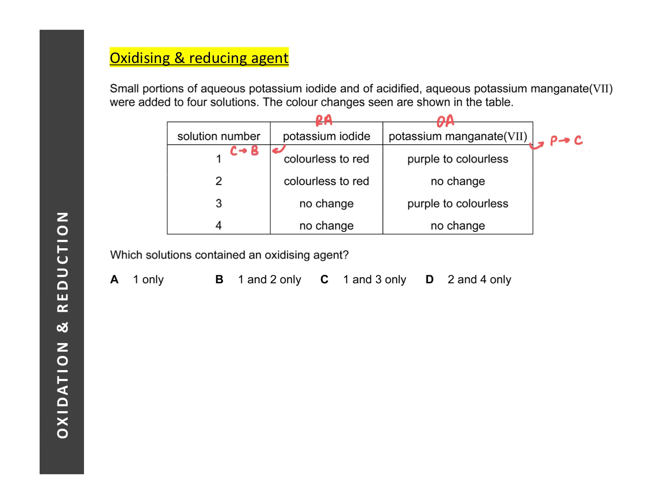The question asks which solutions contain an oxidizing agent. An oxidizing agent would cause the reducing agent to undergo a reaction showing a color change. In solutions one and two, there was a color change in the potassium iodide. As long as there is a color change, it means the potassium iodide has undergone reaction. So the two solutions that contain an oxidizing agent — those that reacted with the reducing agent — are one and two.